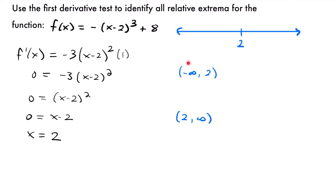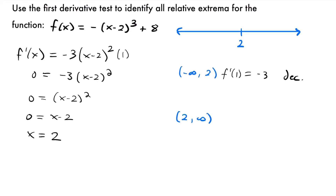Let's test a value within the first interval. I'll choose 1. f prime of 1 equals negative 3 times 1 minus 2 squared. One minus 2 is negative 1, and negative 1 squared is positive 1. So this equals 1 times negative 3, which is negative 3. We have a negative slope, meaning the function is decreasing on that interval. So we put a minus sign on that side of 2 on our number line.